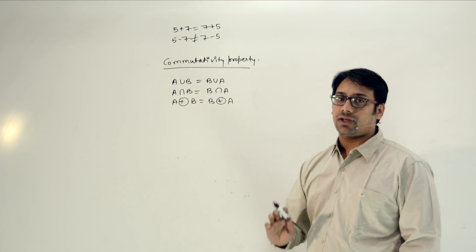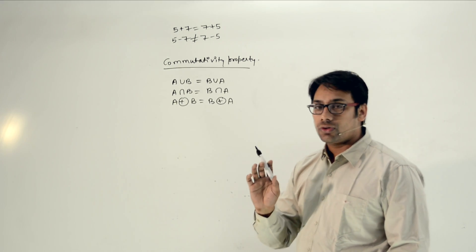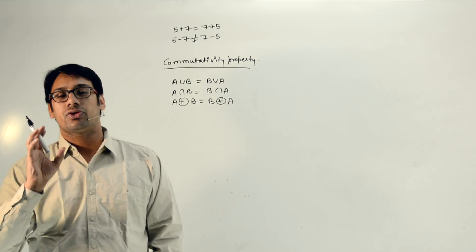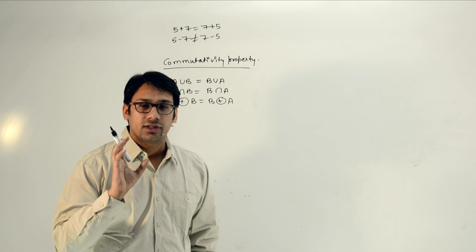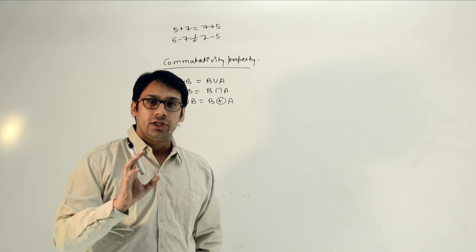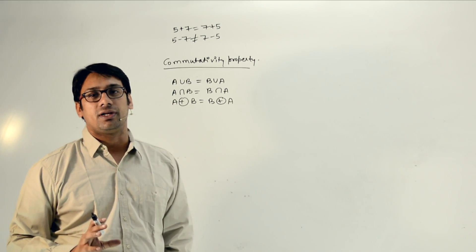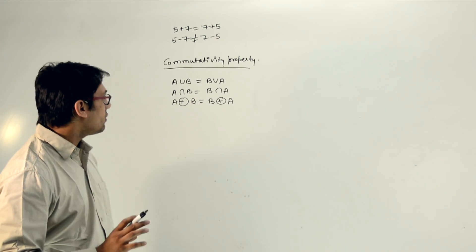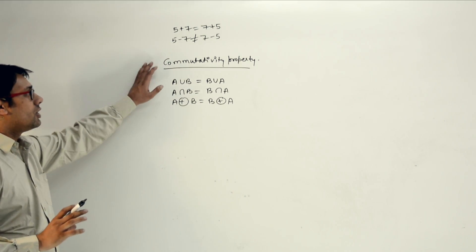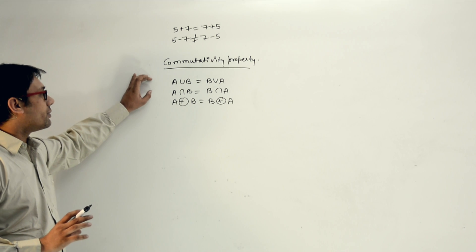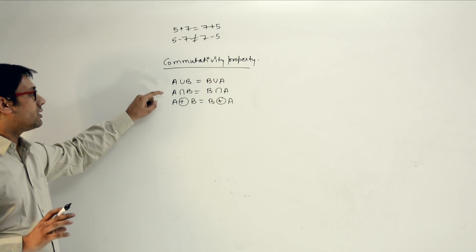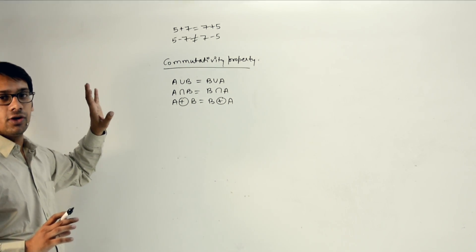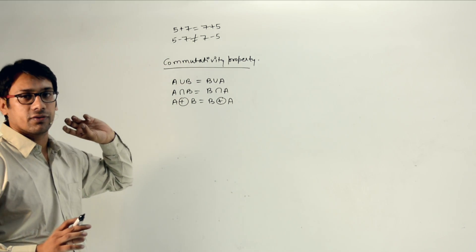In the same way, in set theory we follow operations like intersection, union, and symmetric difference. We need to study what properties these operators follow. For the commutativity property, intersection, union, and symmetric difference are all commutative.